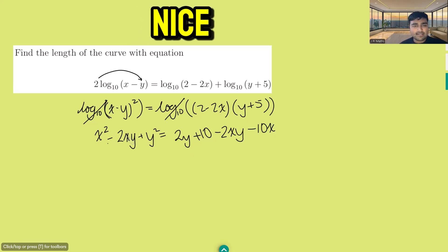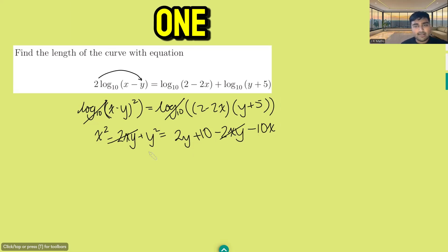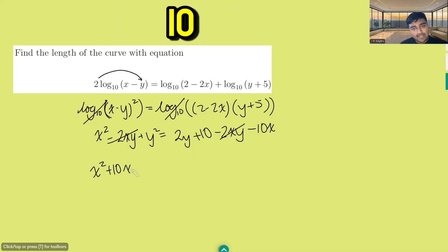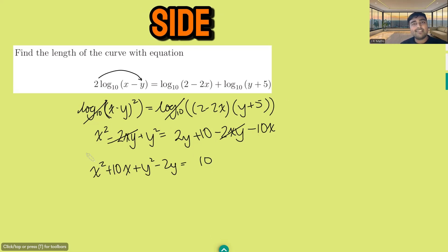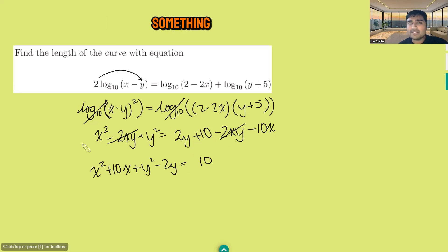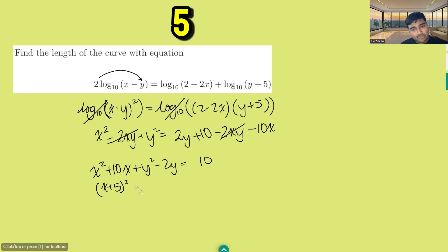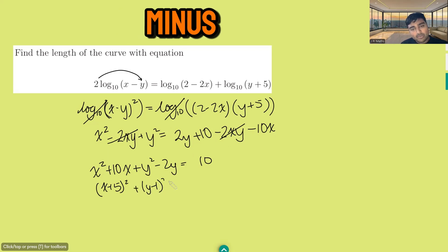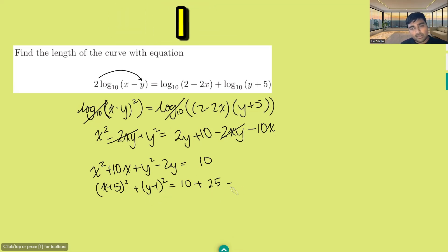A little bit messy, but quite nice because the negative 2xy terms cancel. Bringing everything to one side, we get x squared plus 10x plus y squared minus 2y equals 10. This has obviously got something to do with a circle. Completing the square gives (x plus 5) squared plus (y minus 1) squared equals 10 plus 25 plus 1, which is 36.